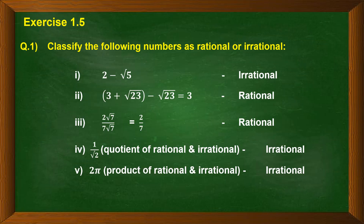The first question is: classify the following numbers as rational or irrational. Let us take the first number: 2 minus root 5. Now, 2 is a rational number and root 5 is an irrational number. The difference between a rational and an irrational number forms an irrational number. So 2 minus root 5 is an irrational number.